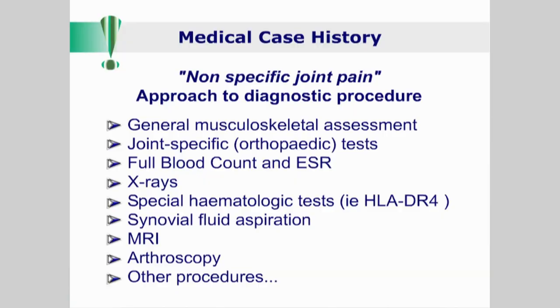Take the case of a middle-aged woman with a swollen, painful wrist. You would not select to test for the tissue marker HLA-DR4 or synovial fluid aspiration if you haven't first progressed through a logical examination algorithm. In this instance, you should start your clinical investigations with a general musculoskeletal assessment, then progress if necessary to joint-specific tests, a full blood count and ESR, x-rays, special hematologic tests, synovial fluid aspiration, MRI scan, arthroscopy, and so on.